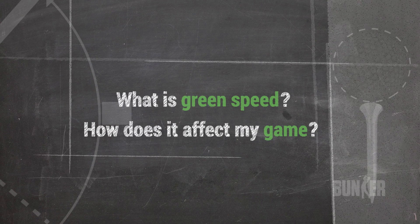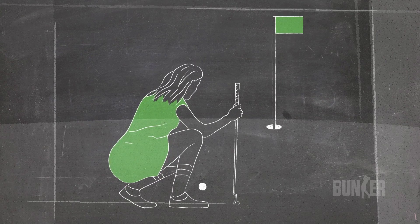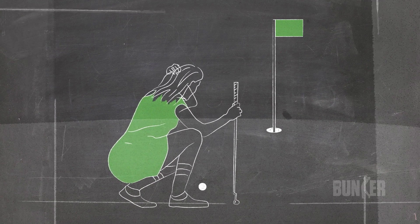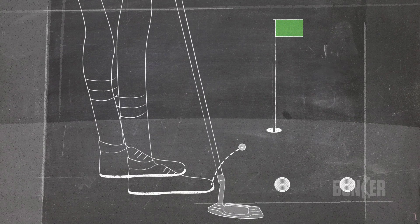No golfer wants to spend too long on the green. If you understand green speed, you can improve your short game on every hole. So what is green speed? It's an indicator of how fast or slow a ball rolls on a green.